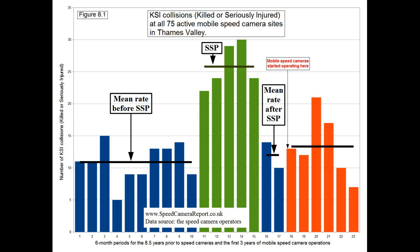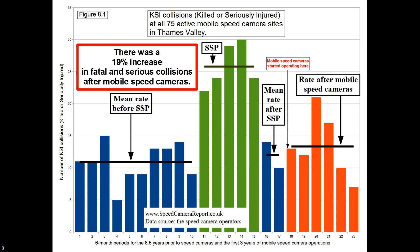But they did. And when they did, the collision rate rose above the previous mean rate. That suggests that speed cameras are not saving lives, but are actually causing an increase in fatal and serious collisions.